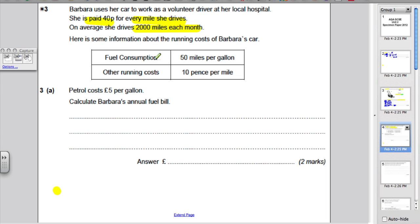And it says there are some running costs of her car. She uses her fuel consumption. Every gallon, she drives 50 miles, so 50 miles a gallon, and she pays 10p per mile in other car running costs. The petrol costs her £5 for every gallon she uses. Now, it asks us to calculate Barbara's annual fuel bill. Annual means each year, and they just want the fuel, not other running costs, not anything else, just the fuel bill.